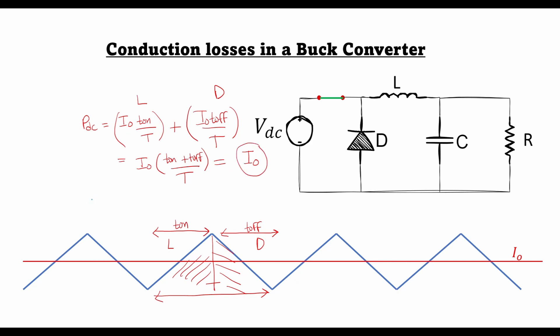If we calculate the efficiency taking into account only the DC losses, we can write efficiency as P0 over P0 plus the DC losses. P0 is the output average current times the output voltage V0. This can be written as V0 times I0 divided by V0 times I0 plus I0. I0 cancels from this expression, so we are left with V0 over V0 plus 1. This is the expression of the conduction loss in a buck converter under steady state conditions.